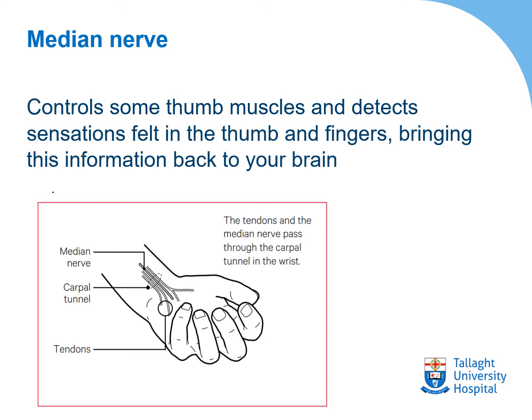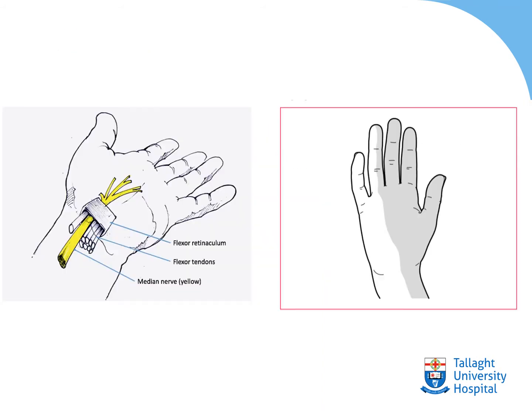So why is the median nerve important? Well, it's one of the three nerves that controls your hand. It primarily controls the thumb muscles and detects sensations felt in your thumb and fingers, bringing this information back to your brain. The picture on your left shows the nerve travelling into the small muscles in your hand, and the picture on the right shows in grey the area of your hand where sensation is controlled by the median nerve.